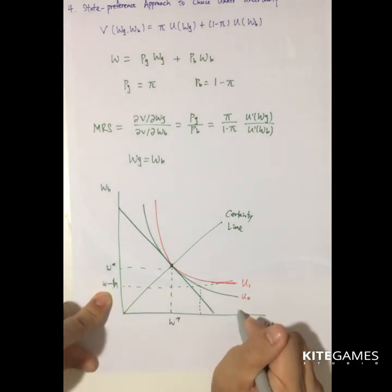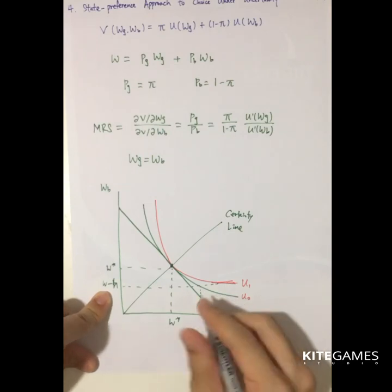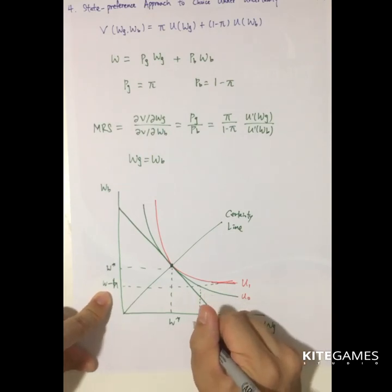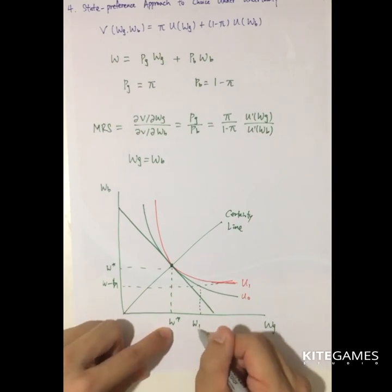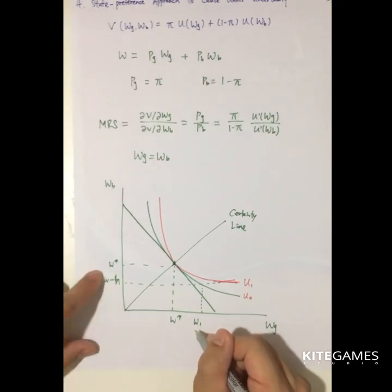For the U not guy, less risk averse one, so he's willing to accept it in this level. You just need to pay me this level. Then I'm willing to accept this risk.